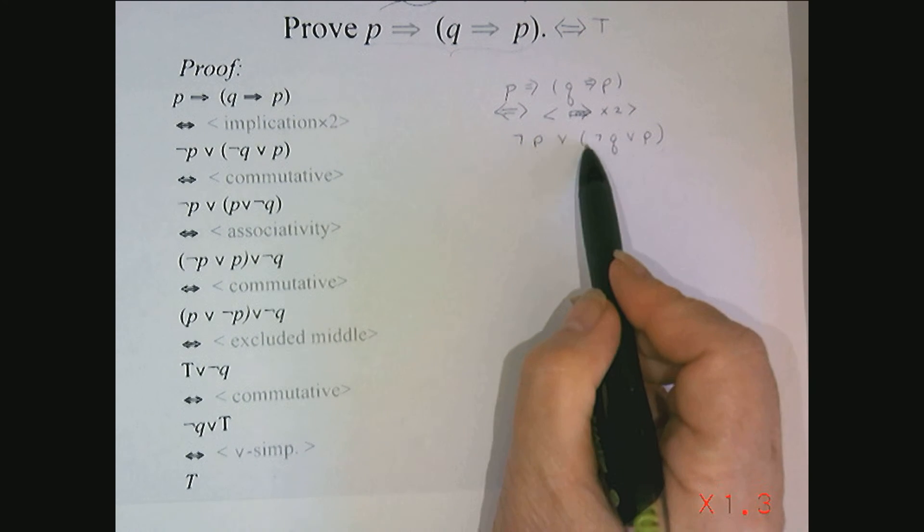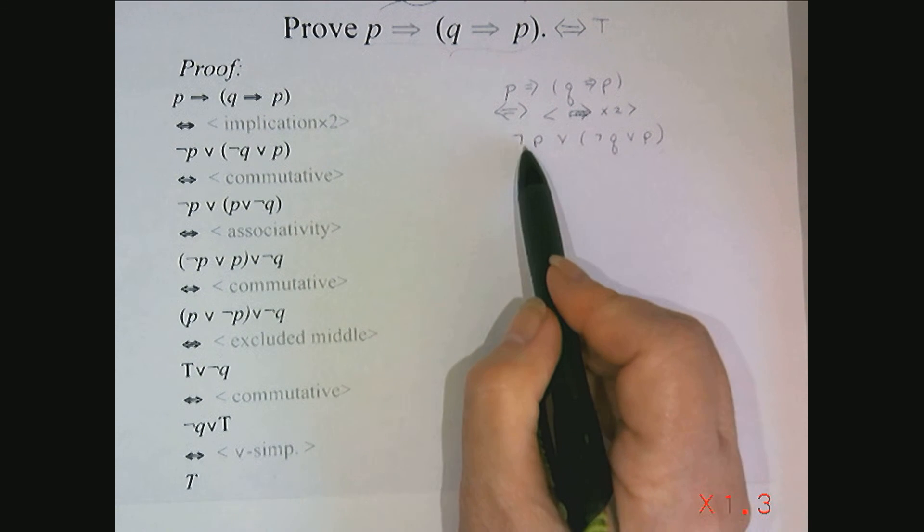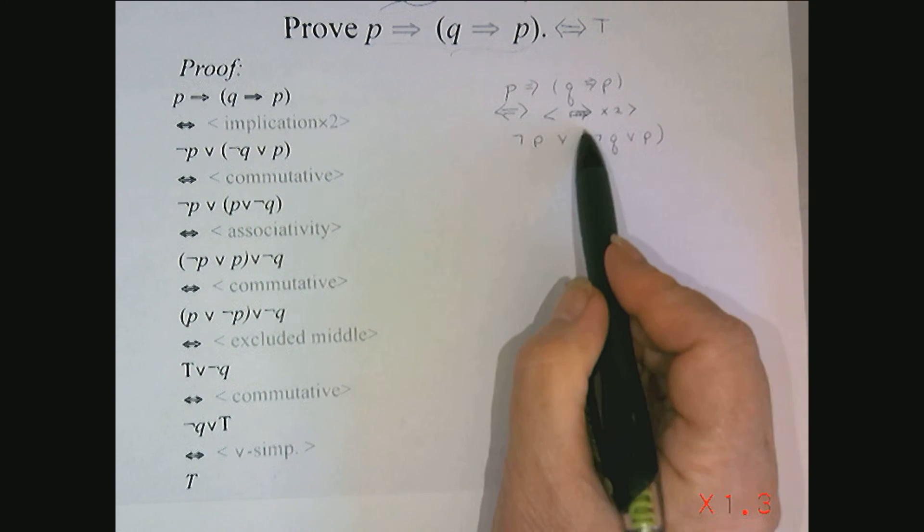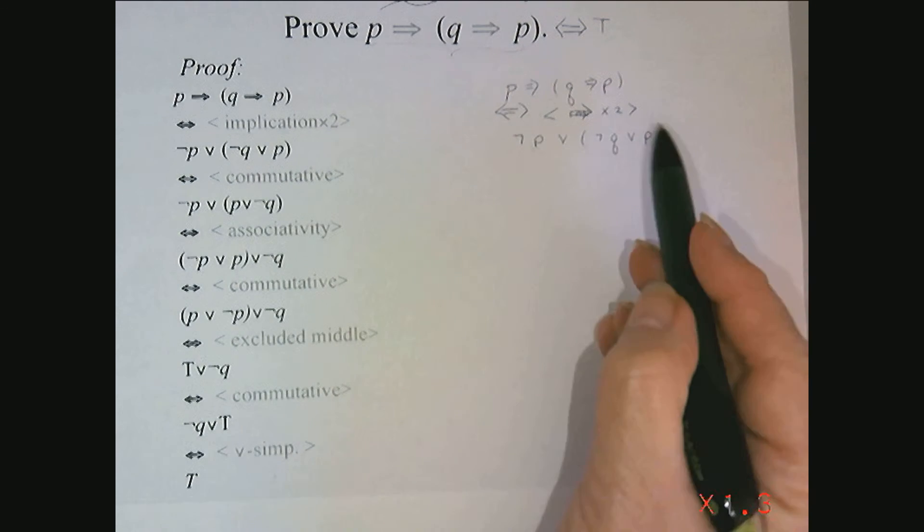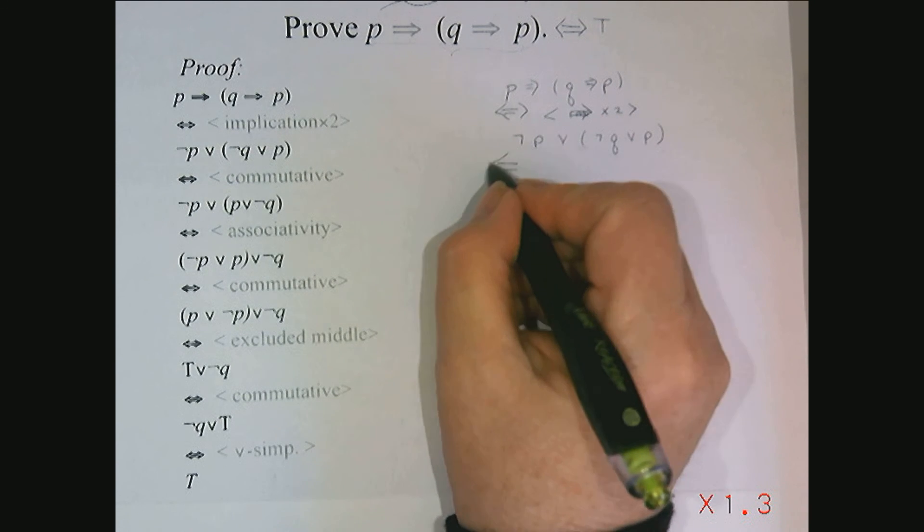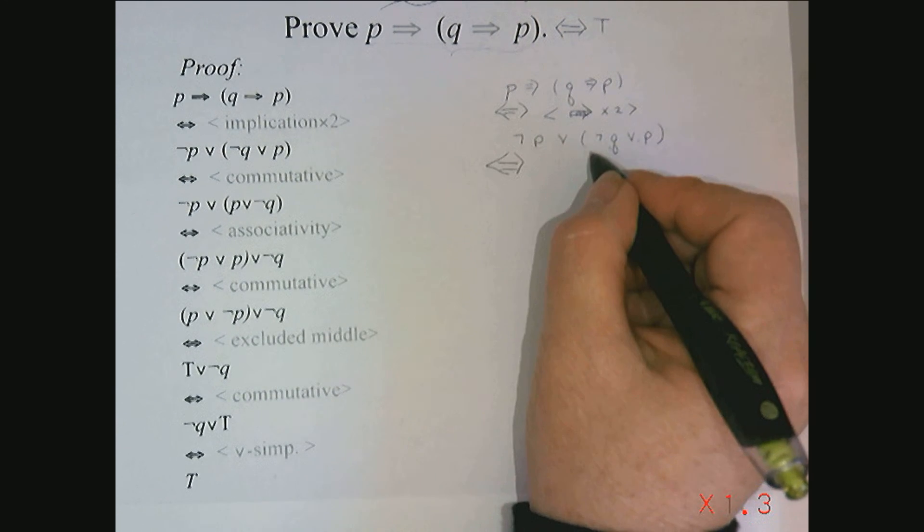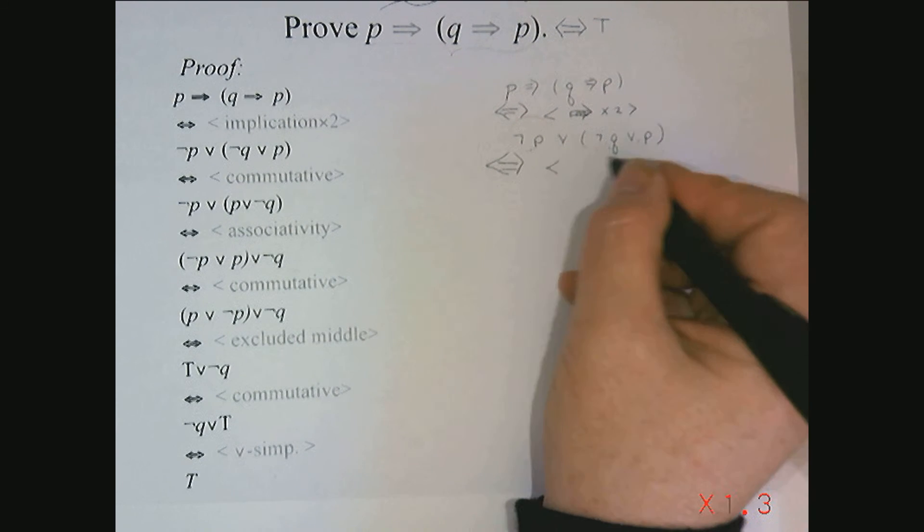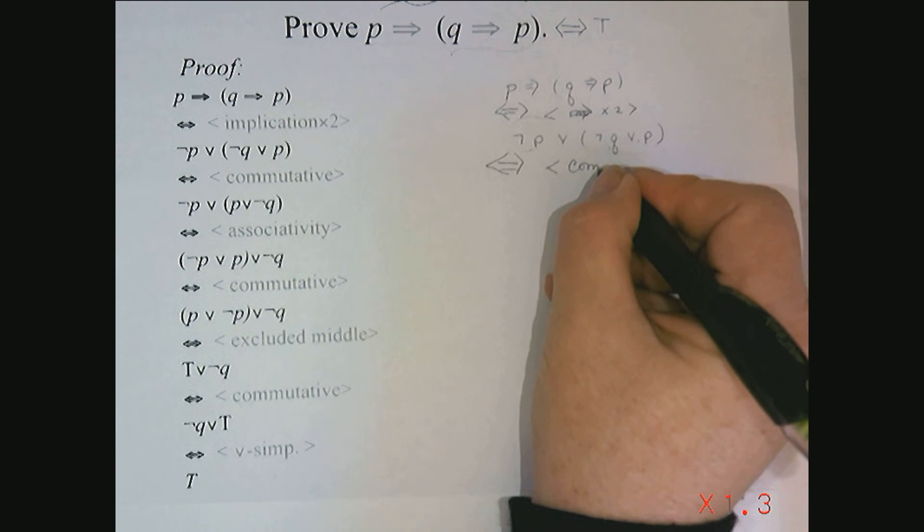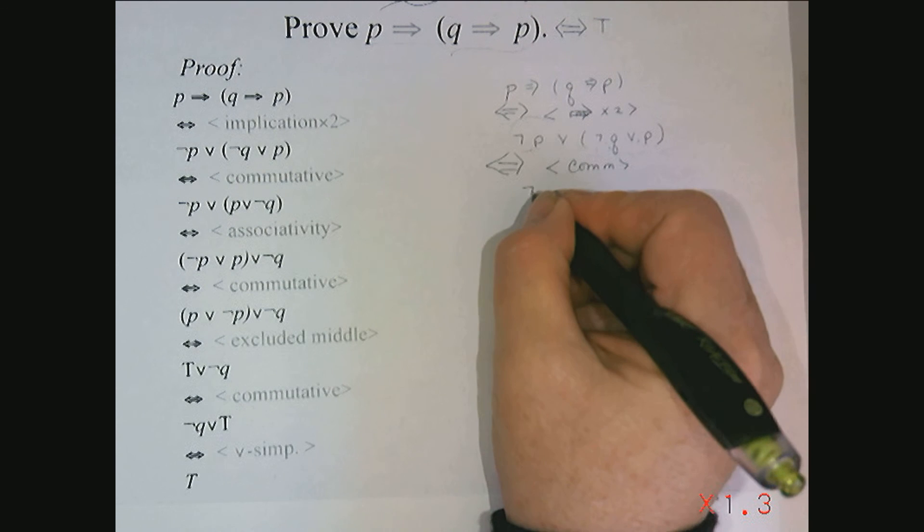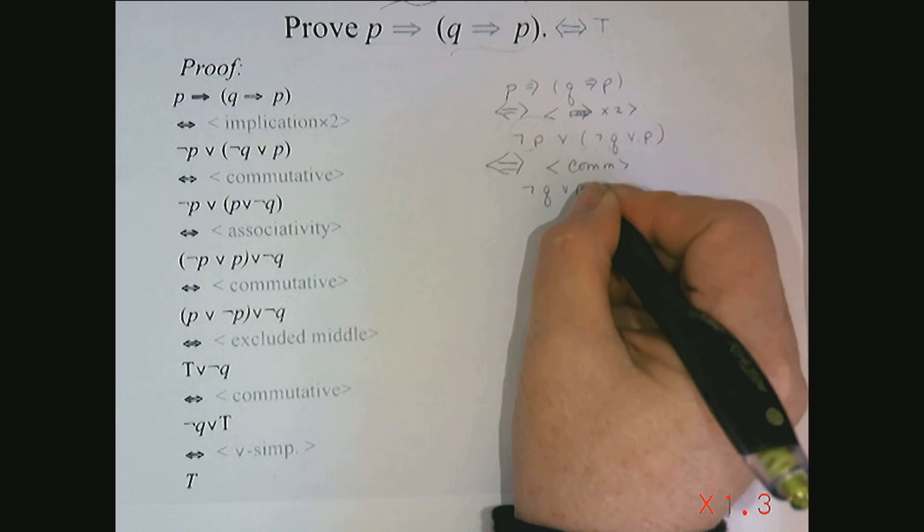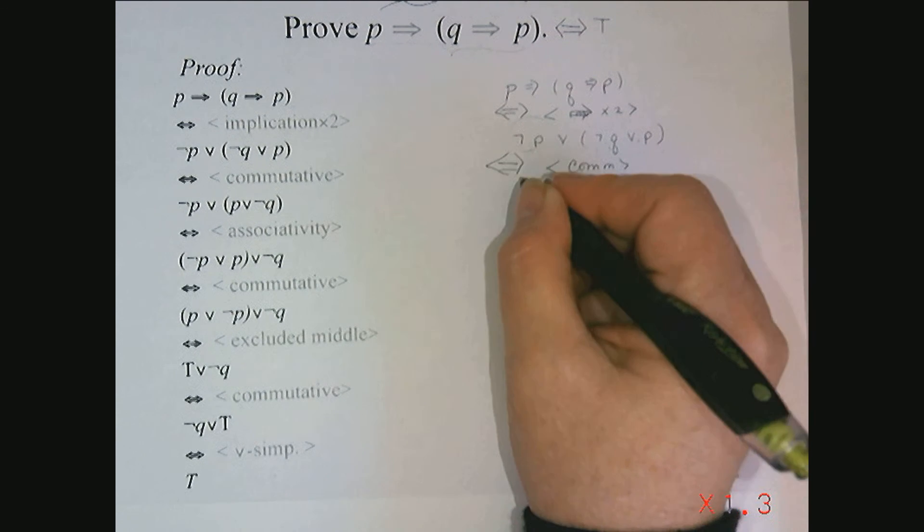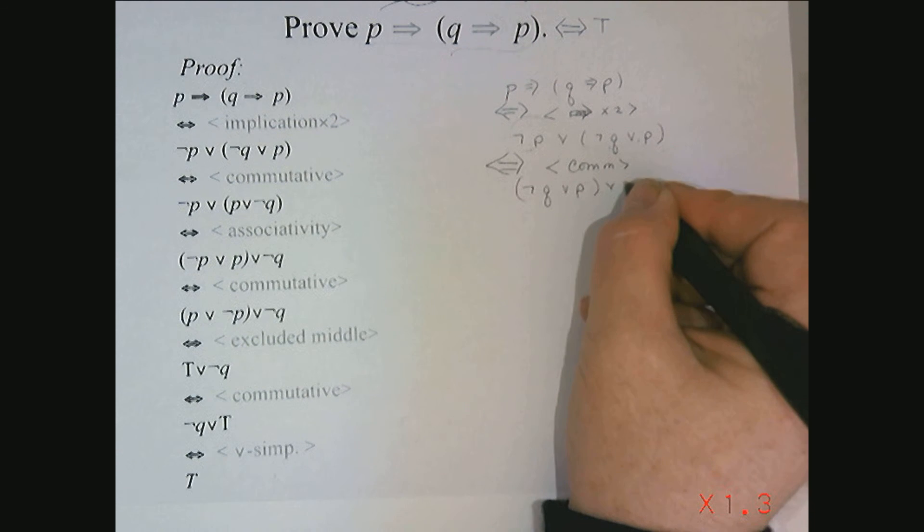I know I could actually use the commutative property and switch the order of this expression and this entire expression right here. So instead of switching these two, I could switch this expression and this expression and I would have come up with not Q or P or not P.